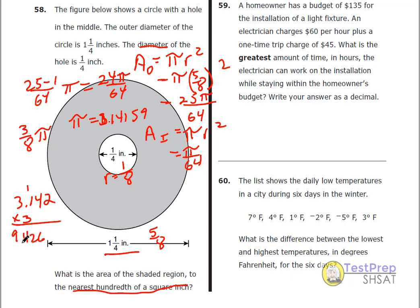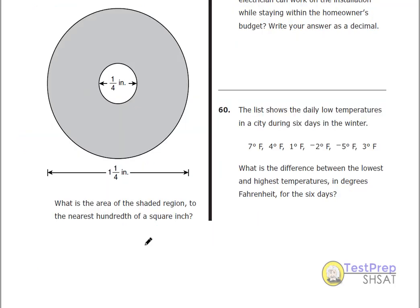and 3 times 3 is 9. And I need to divide that now by 8, because it's 3 eighths pi. So now we need to do long division, 8 to 9.426. So 8 into 9, 1 times, that's 8.